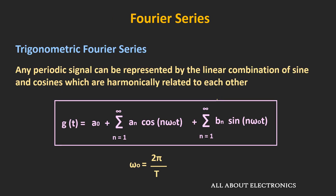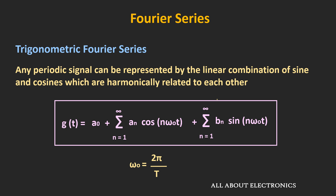Now let's understand why this trigonometric Fourier series is represented in this particular fashion — or in other words, why any periodic signal can be represented in terms of the linear combination of sine and cosine waves. The sine and cosine waves are the basis functions; in other words, they are orthogonal signals. Using such orthogonal signals, it is possible to approximate any signal. So first of all, let's understand the concept of orthogonality.